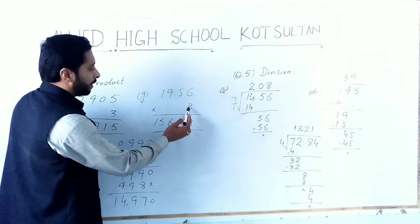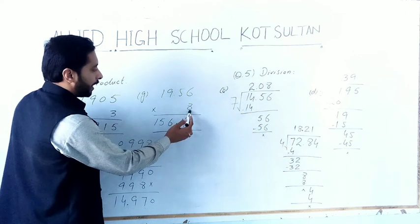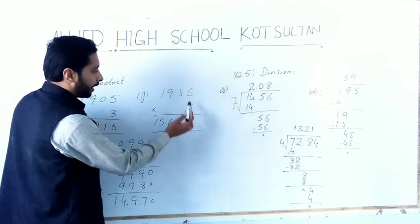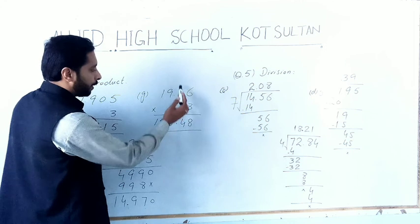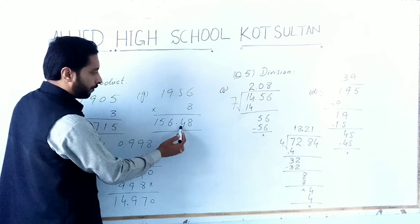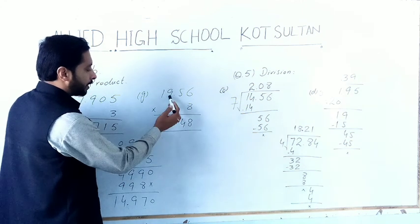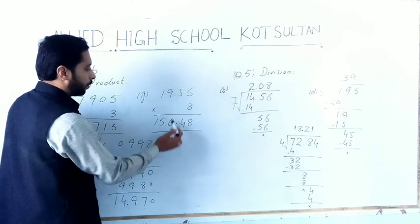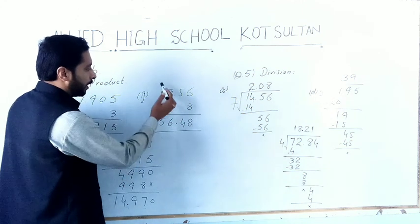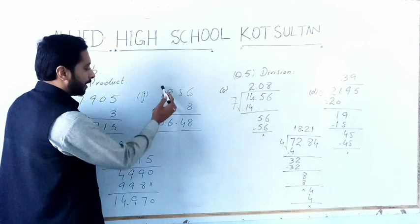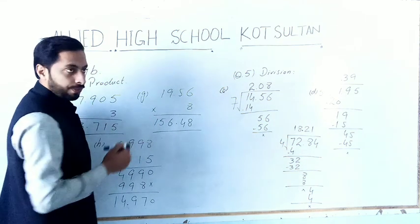For part G: 19.56 × 8. 8 × 6 = 48, write 8, carry 4. 8 × 5 = 40 + 4 = 44, write 4, carry 4. 8 × 9 = 72 + 4 = 76, write 6, carry 7. 8 × 1 = 8 + 7 = 15.